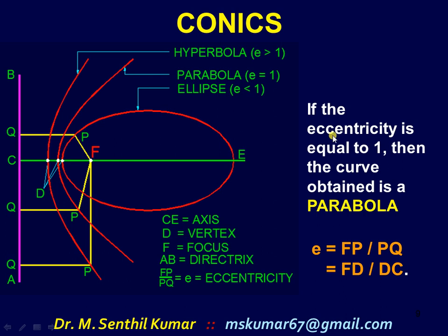Case 2: If the eccentricity is equal to 1, then the curve obtained is a parabola. For example, this profile — the parabola. The eccentricity value is the ratio of FP by PQ. In the case of parabola, the eccentricity is exactly equal to 1, that is, FP is equal to PQ. So FP divided by PQ is equal to 1.